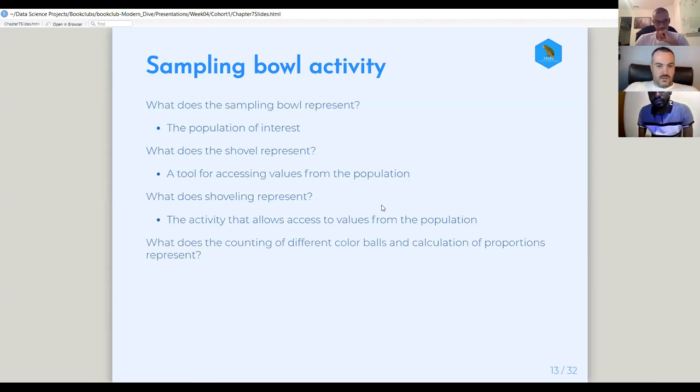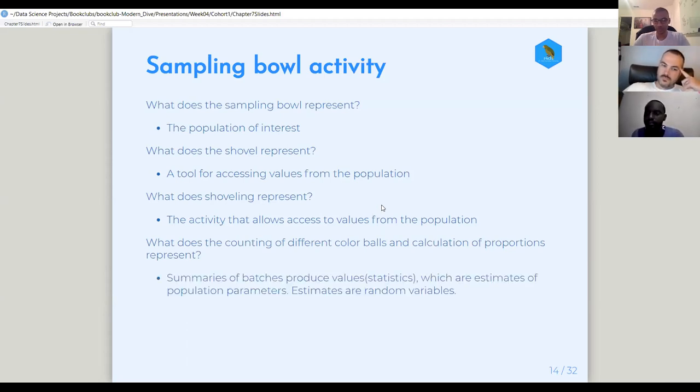And then what does counting two different color balls—so we've scooped them out, and now we count them up and we calculate proportions and all that—what does that represent? Those are like sample statistics. Exactly. Yeah. Summary statistics.